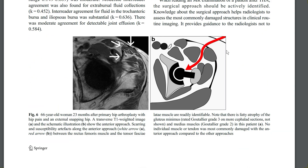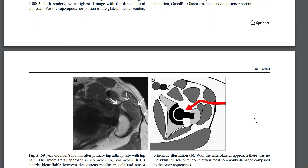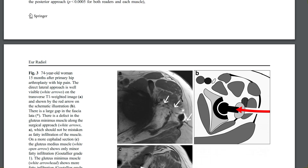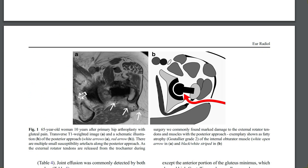To summarize: the anterior approach runs between the rectus femoris muscle and the tensor fascia latae muscle with scarring there. The anterolateral approach runs between the tensor muscle and the abductor muscles. The transgluteal approach goes straight through the soft tissue structures with corresponding damage to the tendons, muscles, and fascia. And last but not least, the posterior approach with damage to the short external rotator tendons.